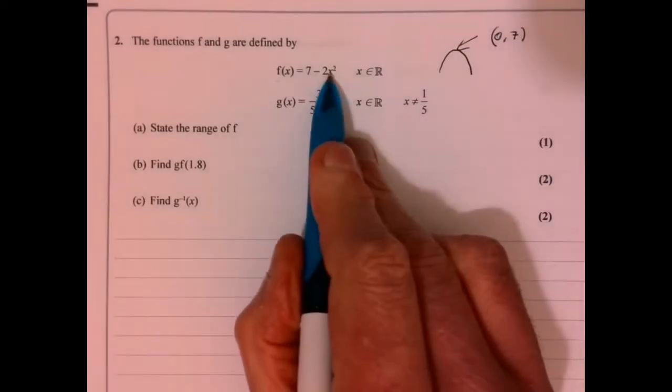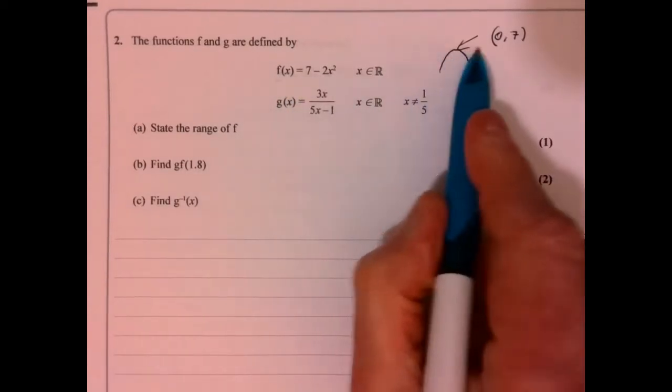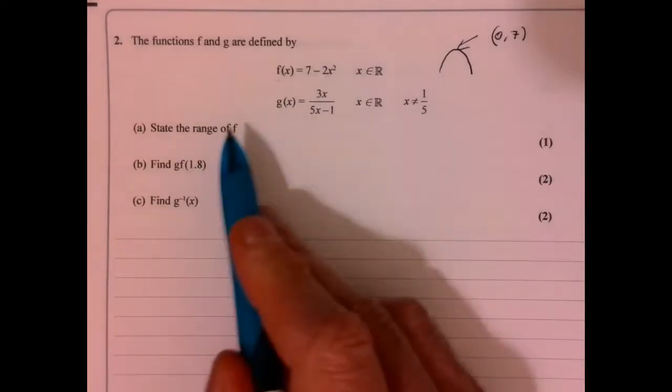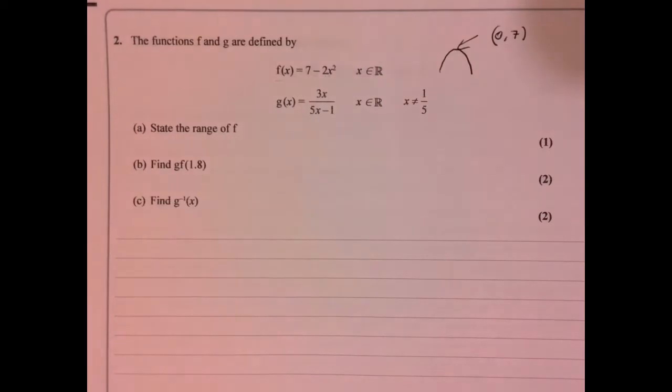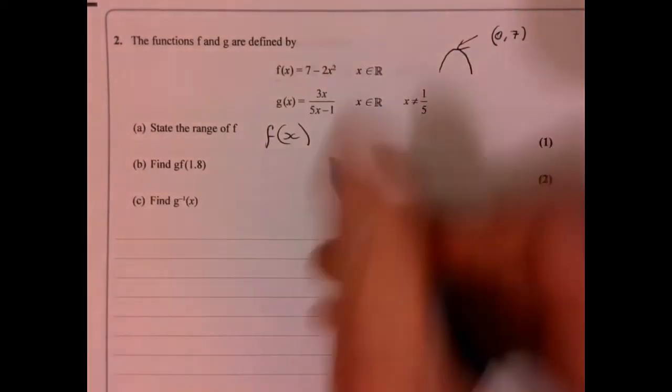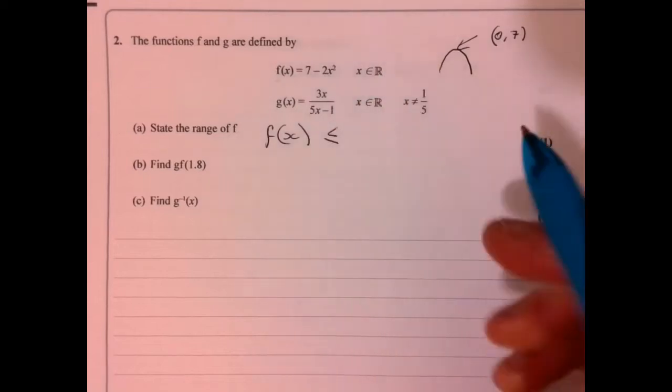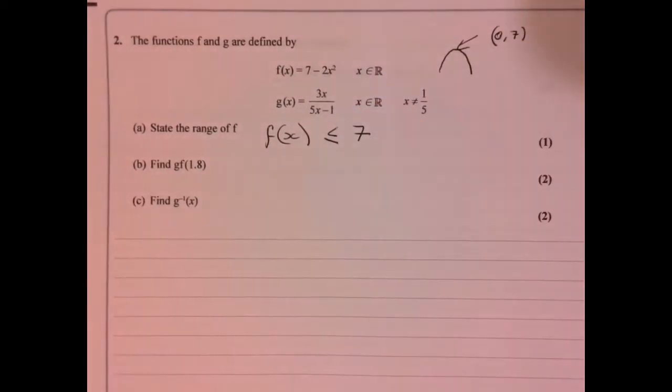Because when x is 0, that's going to maximize this. So it's pretty easy to spot. State the range - how are we actually going to write that down? We're going to write that f(x) is less than or equal to 7. That's what we're interested in.